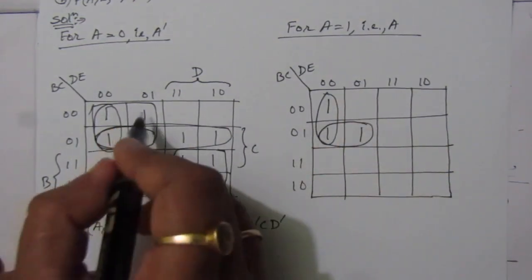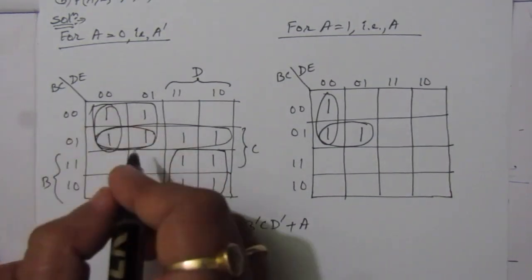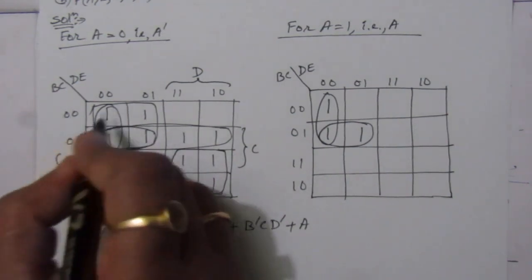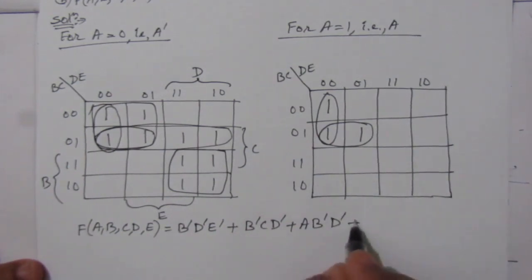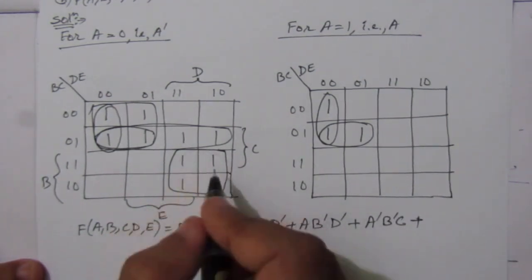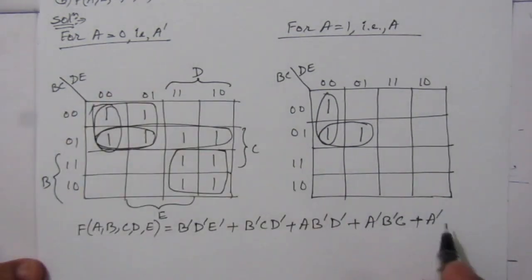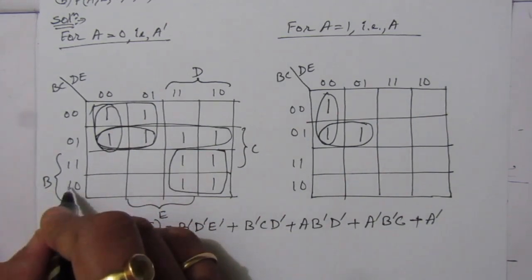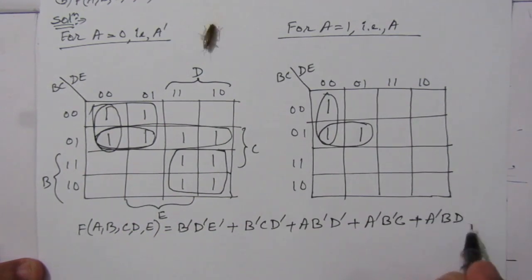From this table, for the remaining term we have A-bar B-bar D-bar, plus A-bar B-bar C, plus A-bar B D. So this is the simplified boolean expression.